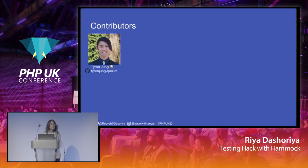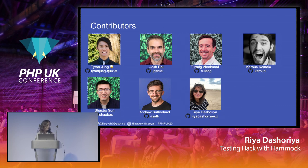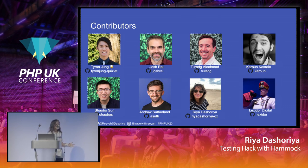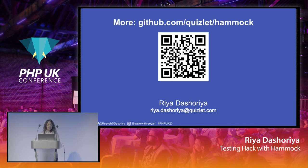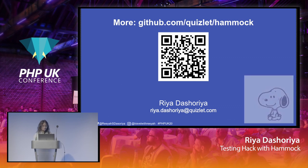With this I want to highlight some people. Ty is the one behind the idea of this testing library — he worked on it for a really long time. Here are some more people from Quizlet who helped make this a reality and helped make it open source. After we made it open source, Lexiter has been really helping out. Initially, Hammock was supporting only HHVM version 3.25, and Lexiter helped us move from HHVM 3.25 to all versions of HHVM, which is a really great open source contribution. With this, I would like to wrap up my talk. Thank you so much. You can check out this link or scan the barcode to go to the Hammock library on GitHub.